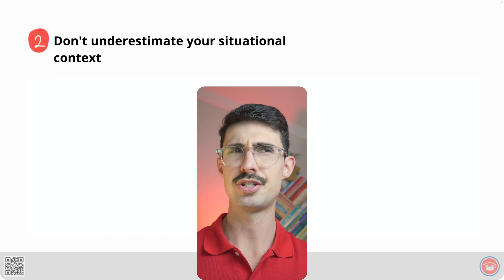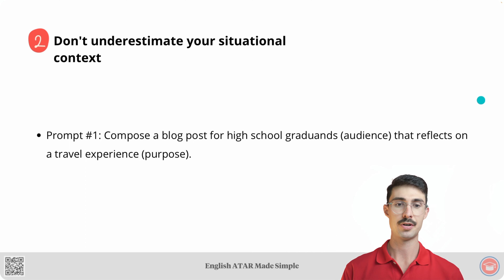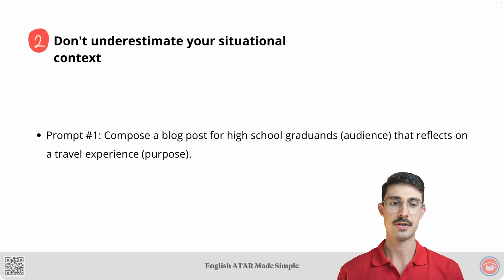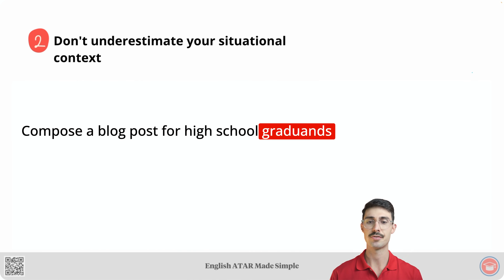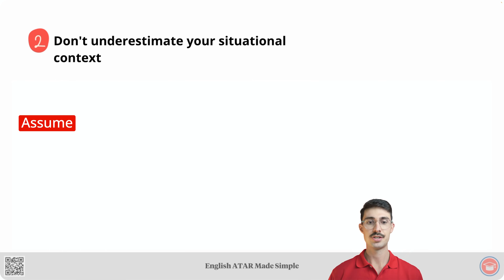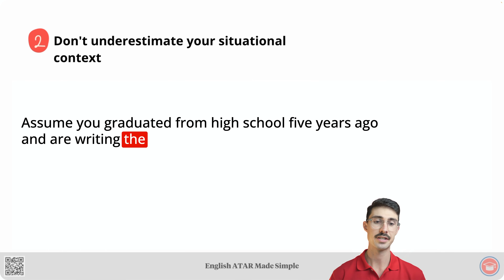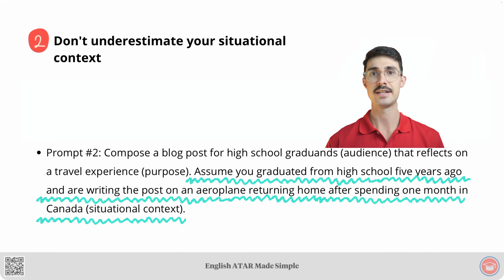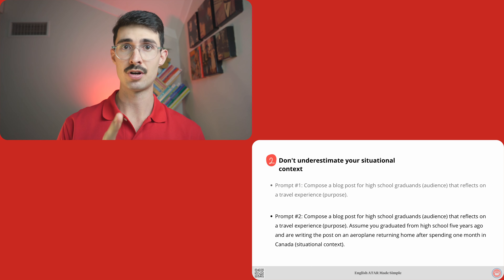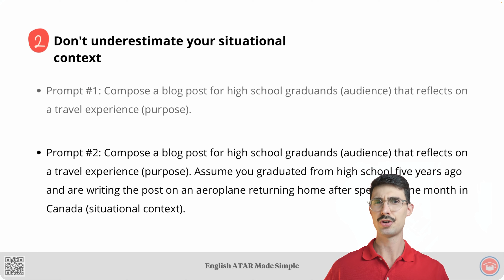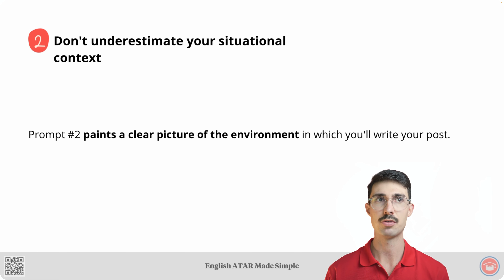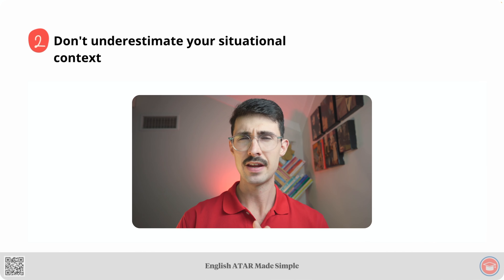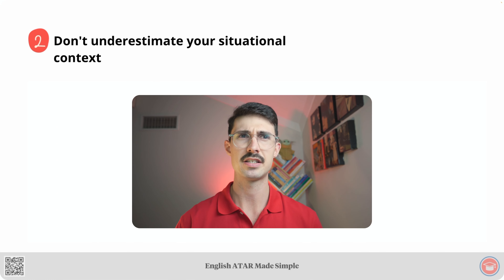Doing this helps you create a more authentic post. To demonstrate this point, assume you've been given one of the following prompts. Prompt one: compose a blog post for high school graduands that reflects on a travel experience. Prompt two is the same audience and purpose, but adds: assume you graduated from high school five years ago and are writing the post on an airplane, returning home after spending one month in Canada. This final sentence refers to the environment in which you will be writing. If I had to write a blog post using one of these prompts, I would personally go for prompt number two every day of the week — because it paints a clear picture of the environment in which I will be writing my post.